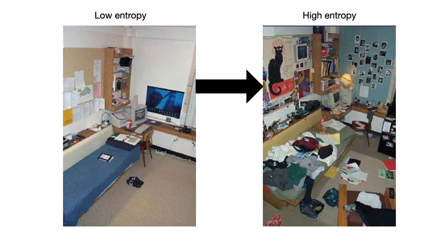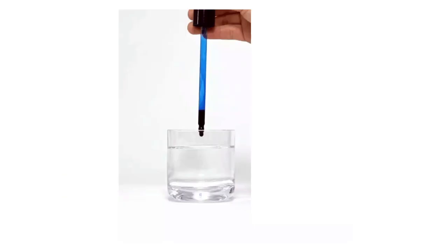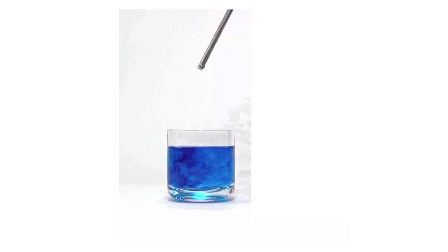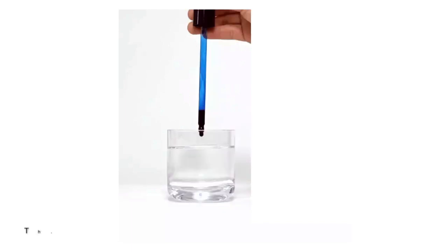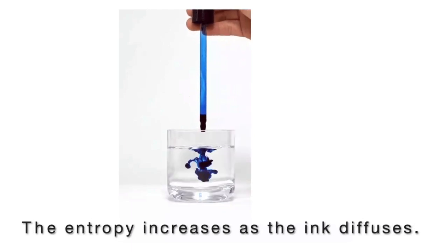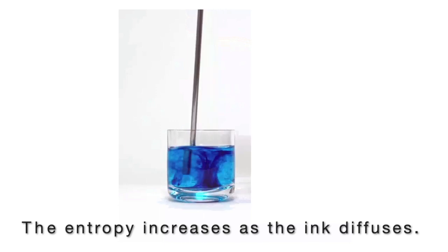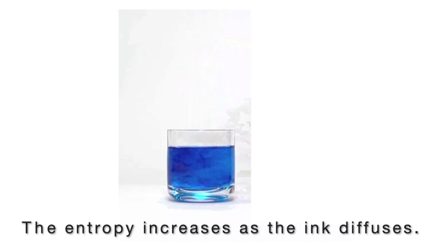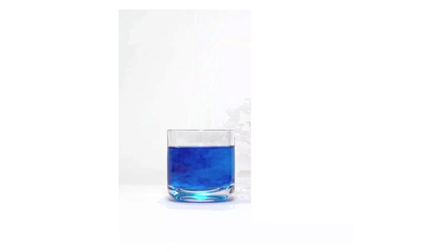But your room doesn't have to stay messy. You can indeed lower the entropy of your room by cleaning it, but to do that it will require work. So that means that we have to put energy into the system in the form of cleaning up and putting everything away. In this video clip, you see what happens when drops of ink are added to a cup of water. The ink naturally diffuses throughout the cup. When the ink is in the dropper and the molecules of ink are close together, the entropy is low. When the ink is diffusing in the cup of water, the molecules are now farther apart and more disordered, so the entropy is higher.